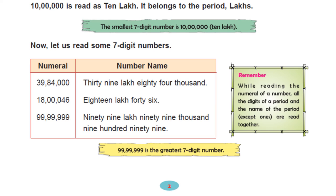Let us read some 7-digit numbers. The numeral 39,84,000 — they have placed the commas, so it's easy to read: 39 lakh 84 thousand. There is no value for hundreds, tens, or ones, so we need not read those. The next number is 1,80,00,046 — that is 18 lakh 46. The largest 7-digit number is 99,99,999.